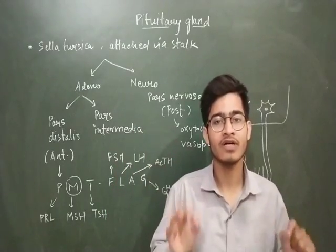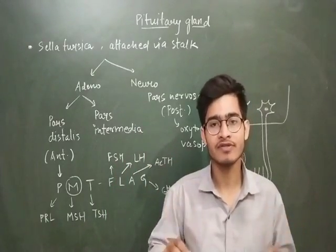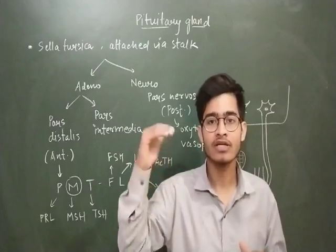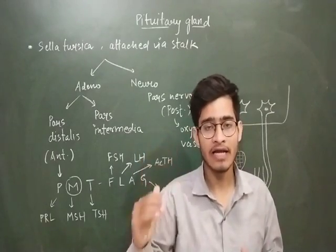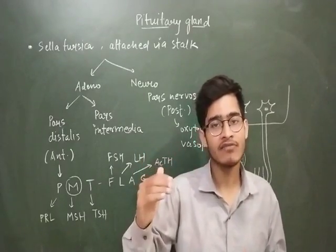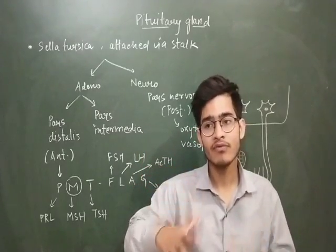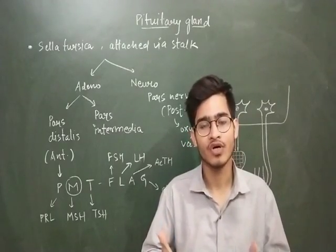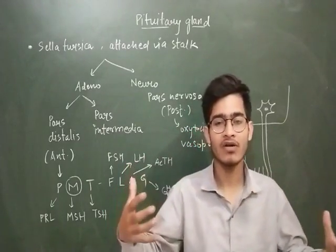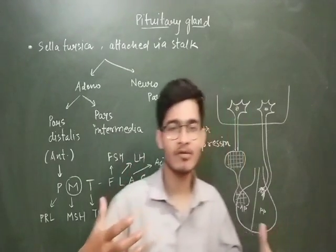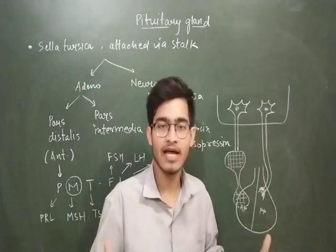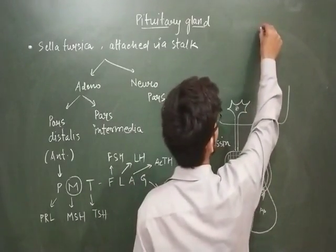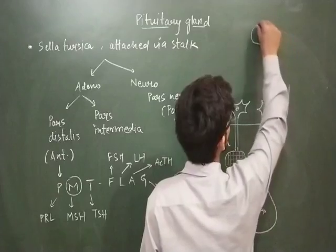Firstly, as we have done in the previous video, we are going to talk about the location of a particular endocrine gland, after that we are going to talk about which hormones are secreted by it, and after that we will talk about its anatomical features — what are the different parts of that gland.